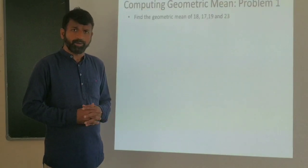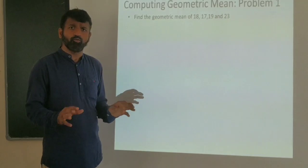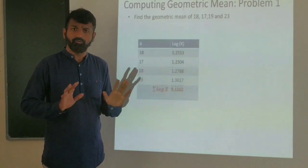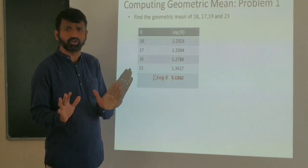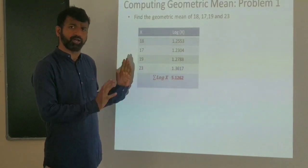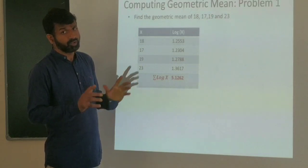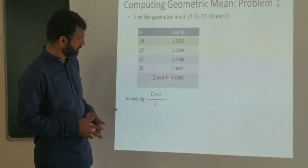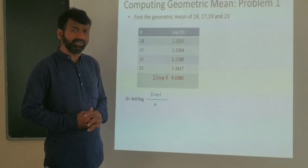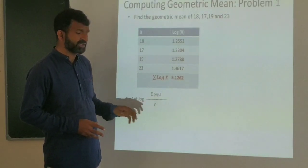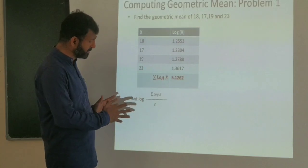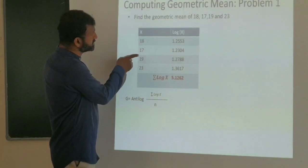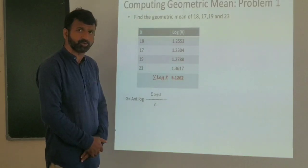Let me solve one problem. This is a raw data problem — find the geometric mean of 18, 17, 19, and 23. Since frequency is not given, it is raw data. The formula is G equals antilog of the sum of log X divided by n.